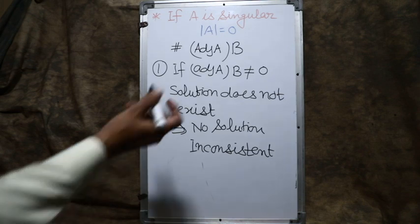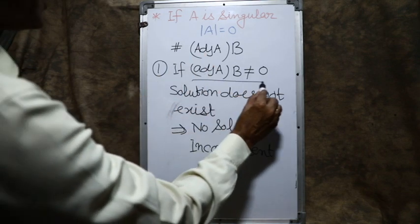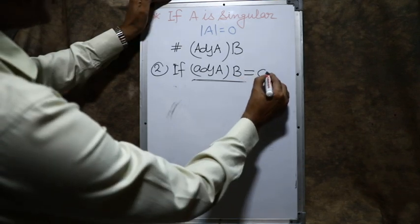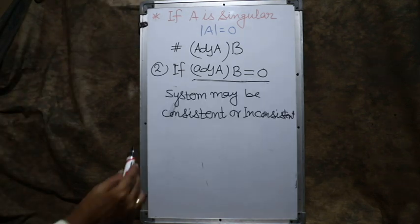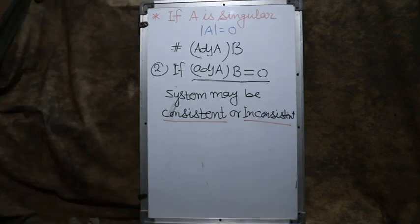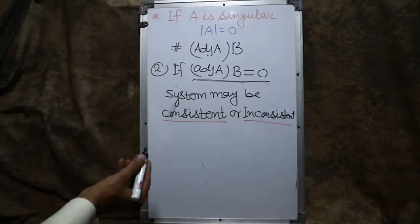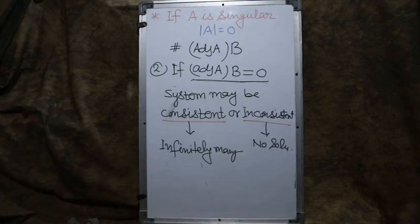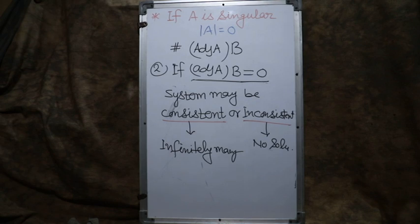Students, you have seen a very interesting property. If adj(A)·B is non-zero, solution will not exist and the system is inconsistent. If it is zero, then both conditions may be there — the system may be consistent with infinitely many solutions, or it may still be inconsistent. Accordingly, we can say whether a solution will exist or not.